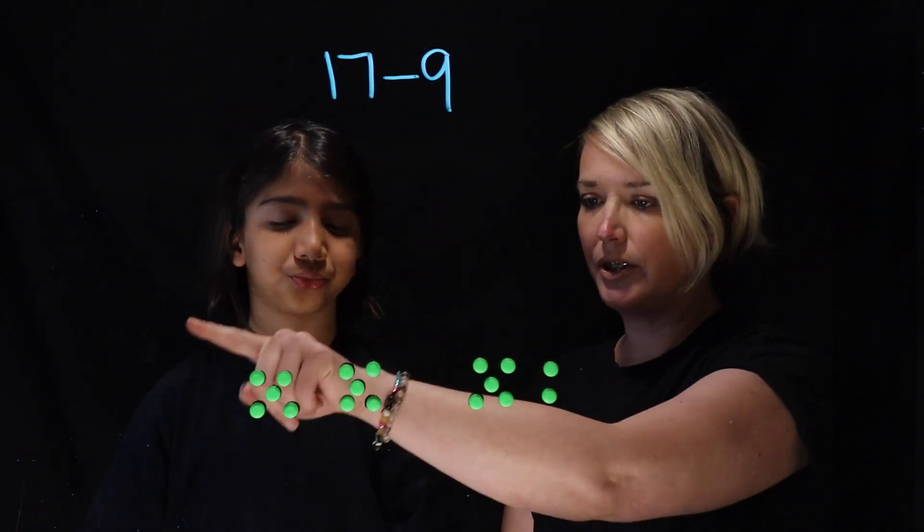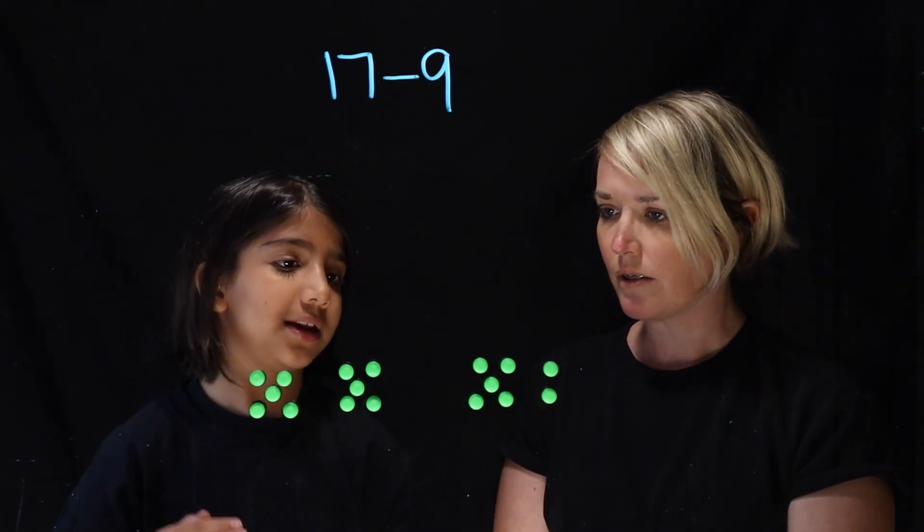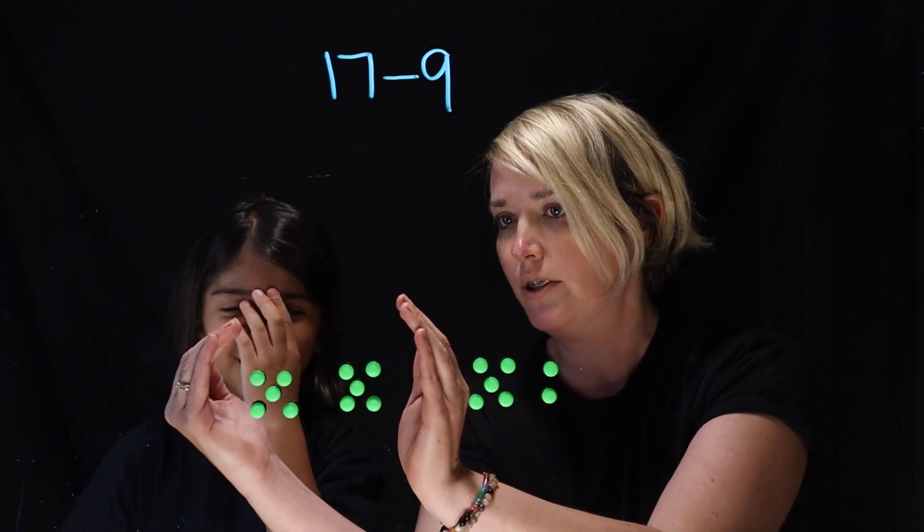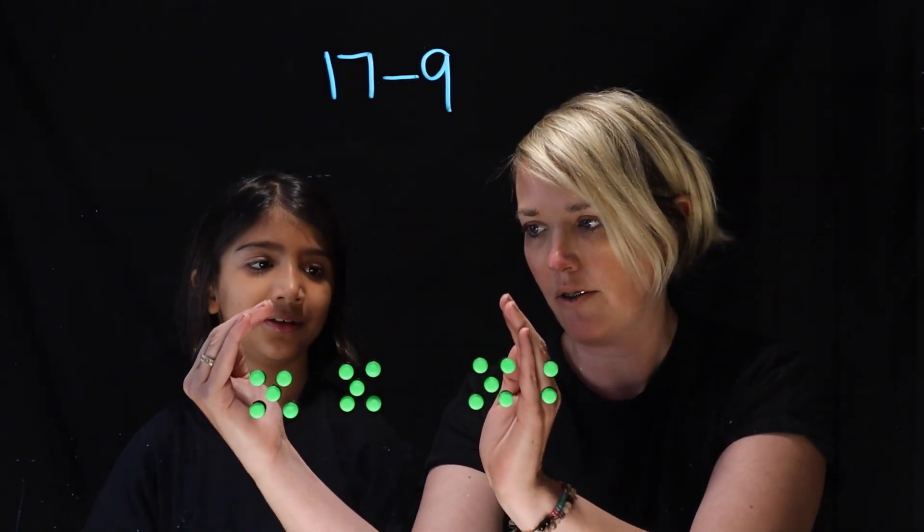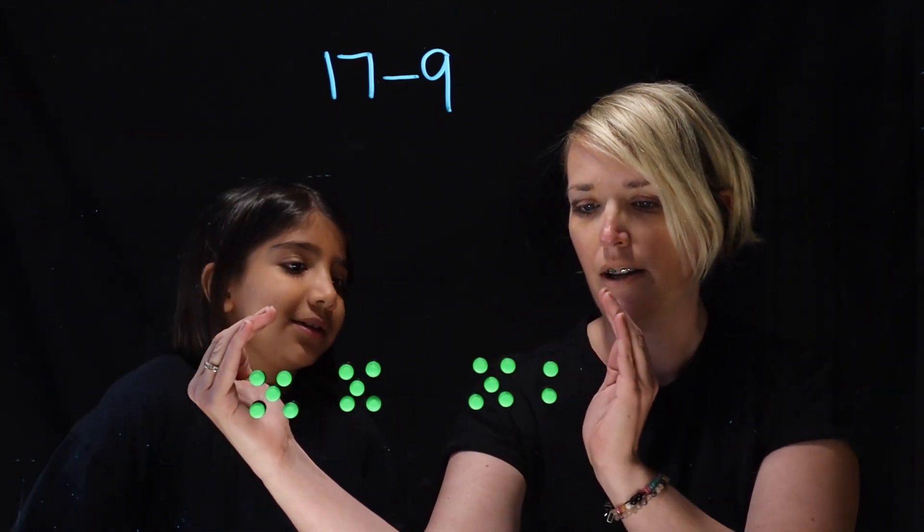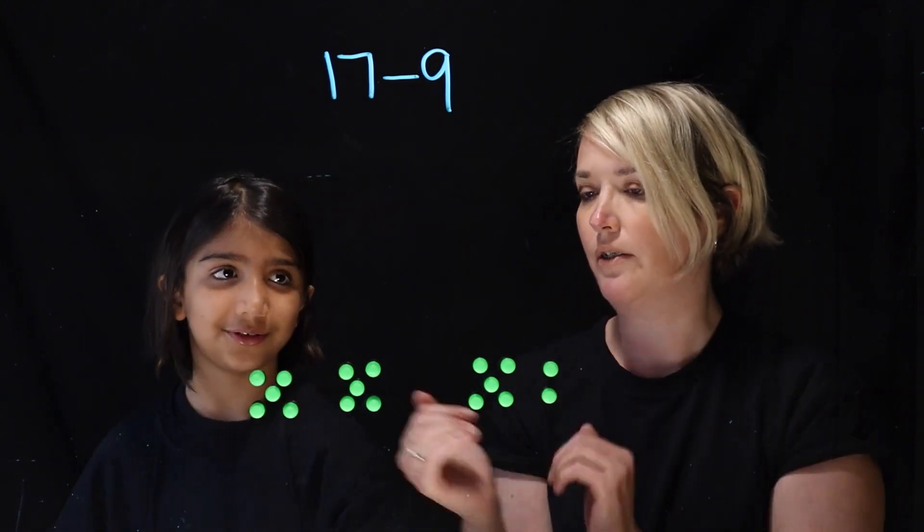So 17, so is this 17? Yes. How come? Because 10. Okay, so this is 5 plus 5 equals 10, yep, and then 15. So everything between my hands is 15, and then 16, 17. Because 15 plus 2 is 17.